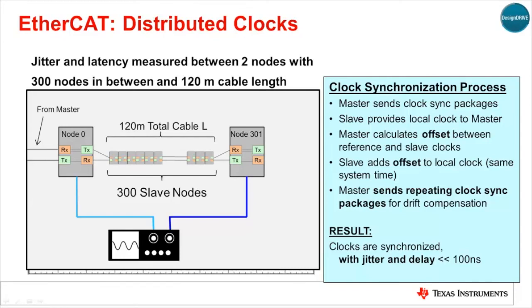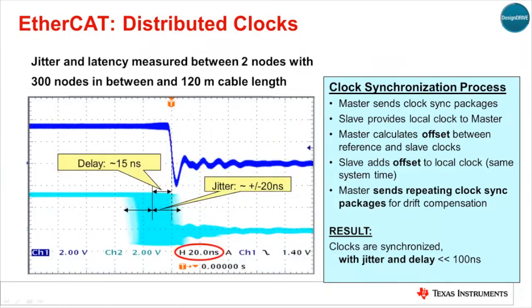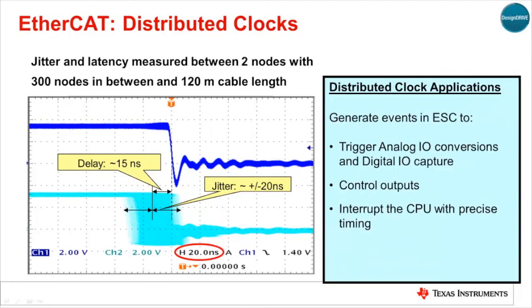In the above example, an EtherCAT network is configured to measure jitter and latency between two nodes with 300 nodes and a total of 120 meters of cable length between them. This oscilloscope screen capture shows the results that can be achieved. Most ESCs, or EtherCAT slave controllers, use 100 MHz timers, which results in an absolute minimum jitter of plus or minus 10 ns. Actual system performance in this example shows a jitter of plus or minus 20 ns with an average delay between clocks of only 15 ns. These low-jitter clocks can be used to trigger analog I/O conversions, digital captures, control outputs, and interrupt the CPU with precise timing, enabling highly accurate real-time control across a large area and a large number of control points.